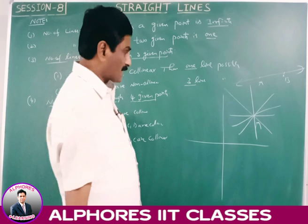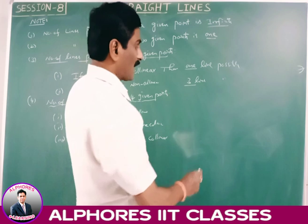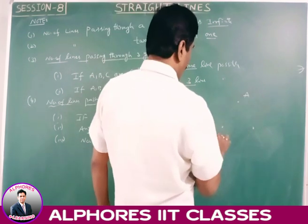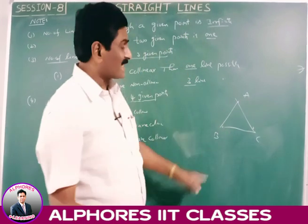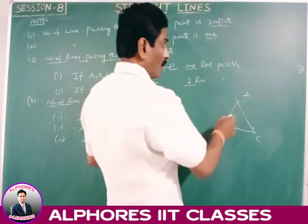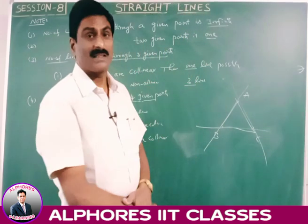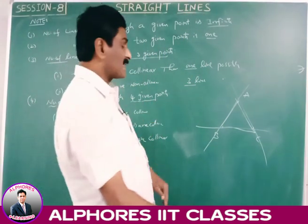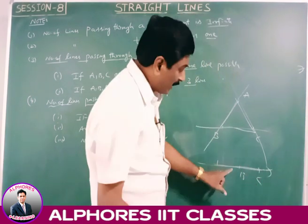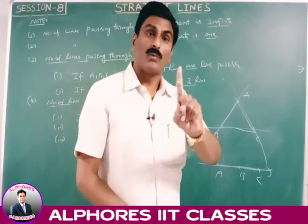Similarly, if there are three points A, B, C in the plane: if they are non-collinear they form a triangle, and three lines are possible — AB, BC, and AC. If A, B, C are collinear (they lie on the same line), then AB, BC, and AC are identical, so only one line passes through them.